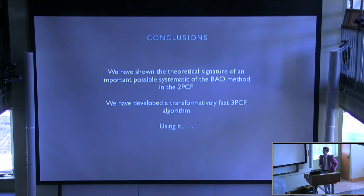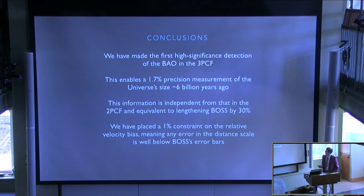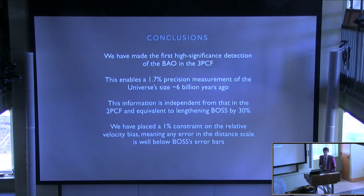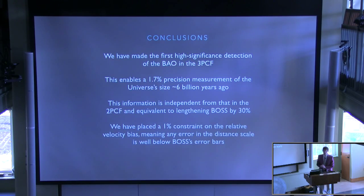To wrap up: we've shown the theoretical signature of an important possible systematic of the BAO method in the two-point function. We've developed a transformatively fast three-point function algorithm, and using it, we've made the first high-significance BAO detection in the three-point function, enabling a 1.7% precision measurement of the size of the universe six billion years ago. This distance information is independent from that in the two-point function and is equivalent to lengthening BOSS by about 30%. Finally, we've placed a 1% constraint on the relative velocity bias, meaning any error in the distance scale this bias produces is well below BOSS's statistical error bars. Thank you very much for your attention.